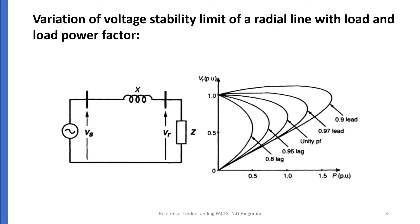Here we will observe the diagram. We have a transmission line — a radial system — with feeder impedance X and load impedance Z. Vs is the sending end voltage and Vr is the receiving end voltage.